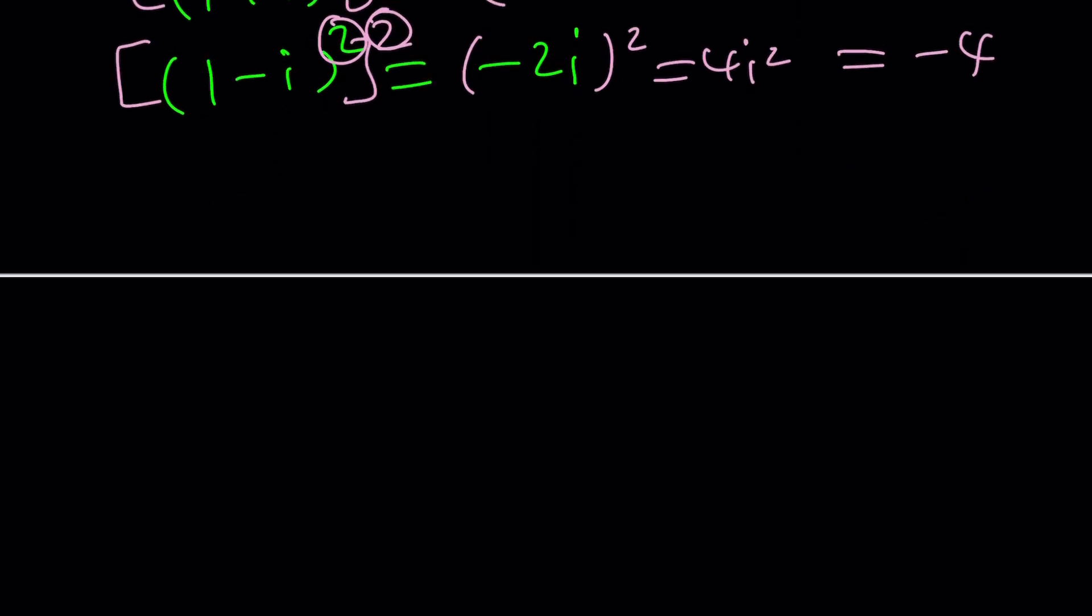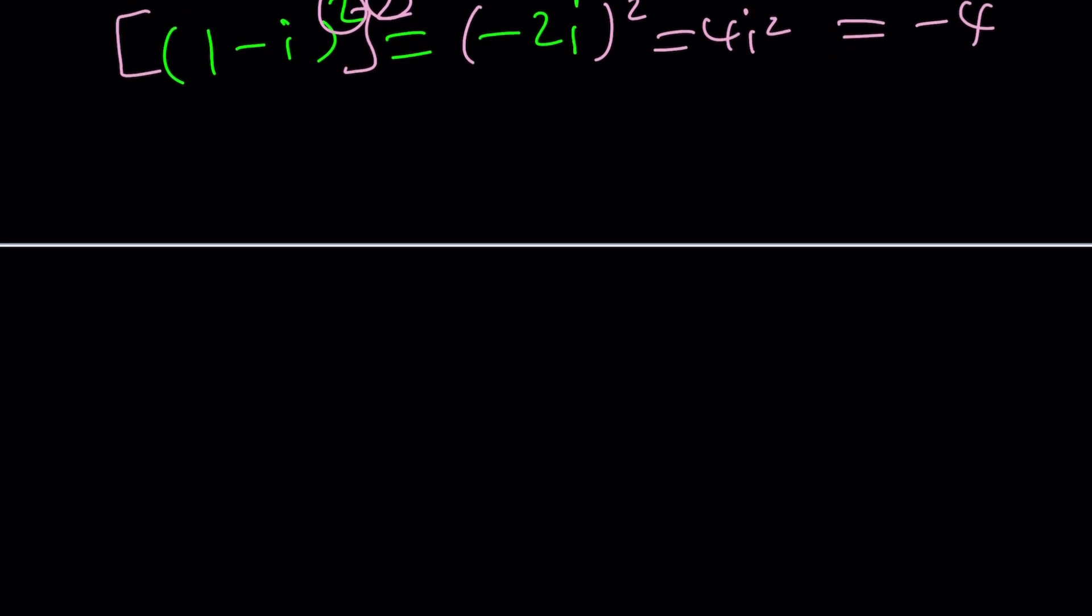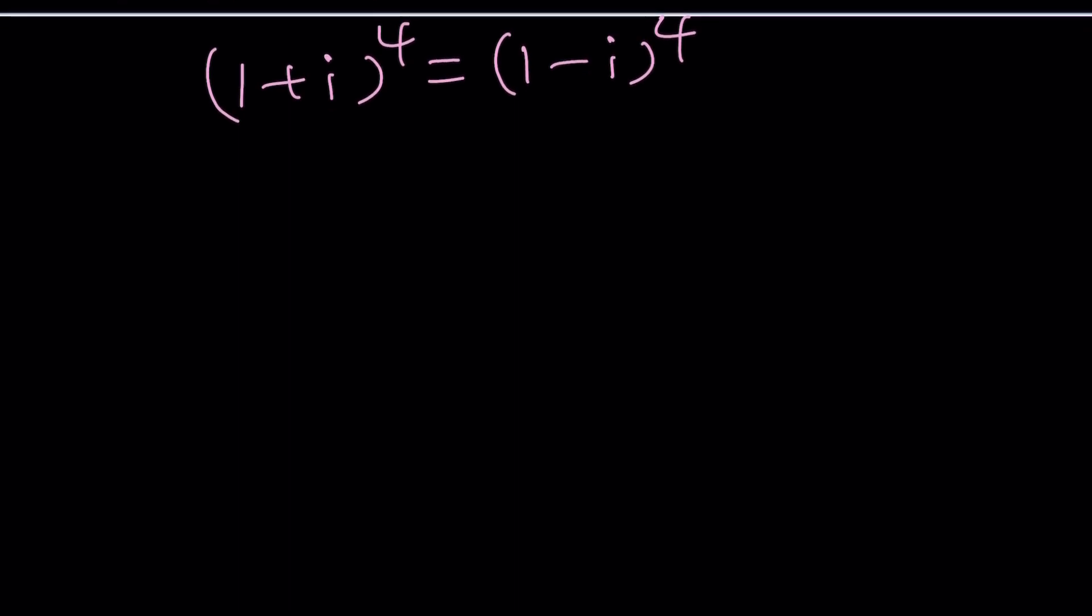So why? Because this is 4i squared and this is 4i squared. So they're both going to equal negative 4 when the powers are 4. Great! So we got a solution, right? Well, sort of. 1 plus i to the power 4 equals 1 minus i to the power 4. But wait a minute. Once you get the equality, you can basically multiply both sides by any power, right? Why? Because you can raise both sides to the power k. So we can safely say that 1 plus i to the power 4k and 1 minus i to the power 4k are equal, which means m equals n equals 4k.